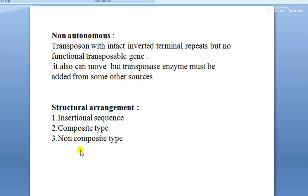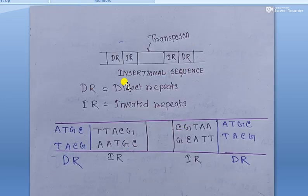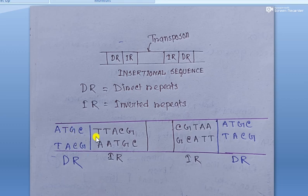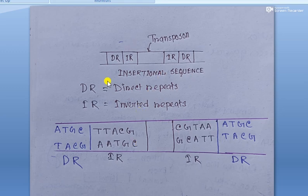The structural arrangement of a transposon includes: insertion sequence, composite type, and non-composite type. The insertion sequence consists of DR, IR, and a transposable gene sequence. DR stands for direct repeats and IR represents inverted repeats. In the case of DR, the nucleotide arrangement repeats directly on both sides of the transposable gene — for example, ATGC on one side and ATGC on the other side.